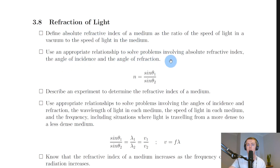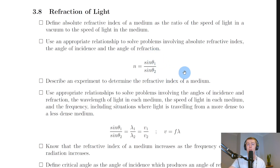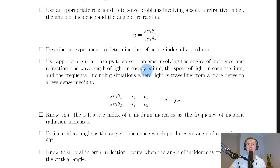Use the appropriate relationship to solve problems involving absolute refractive index, angle of incidence, and angle of refraction: n = sinθ₁ / sinθ₂, where θ₁ is always the angle in the less dense medium (like air) and θ₂ is always the angle in the denser medium.